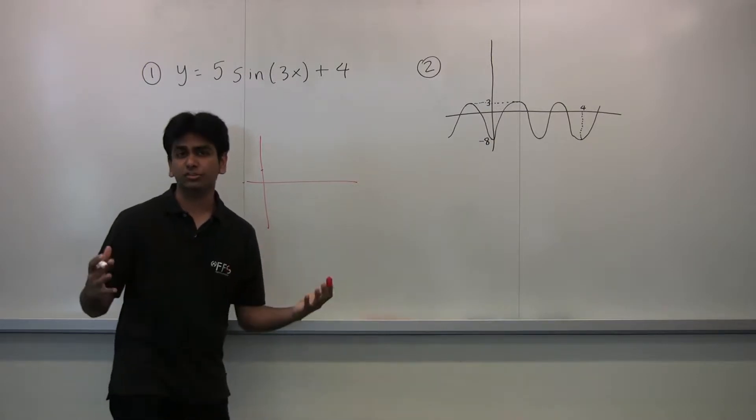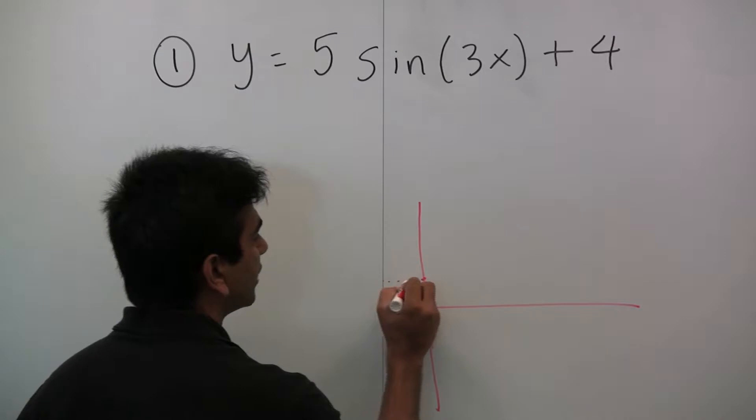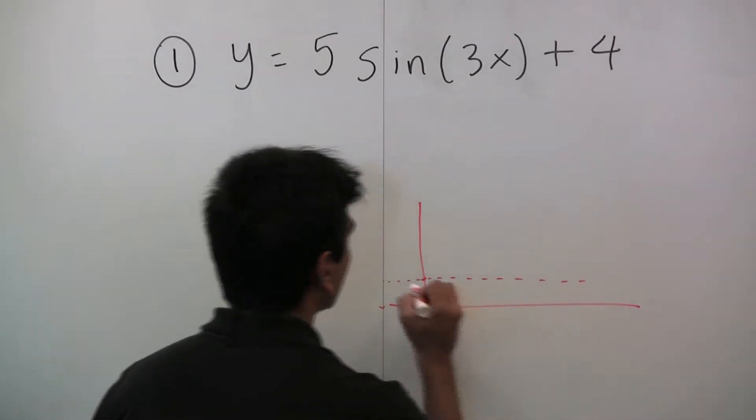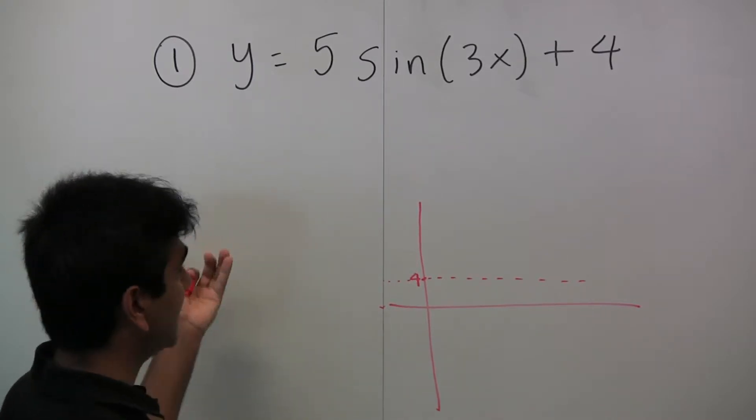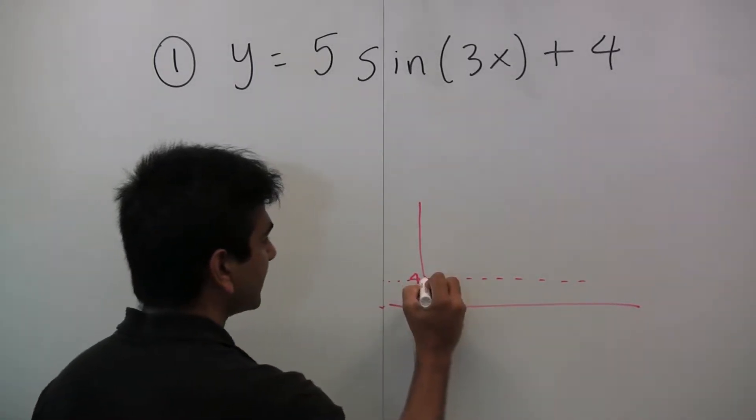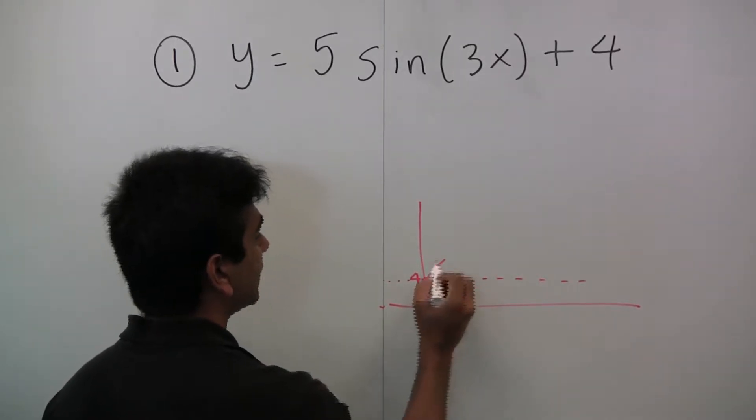c is the imaginary center line. It's not actually on your graph, but it's useful to draw it out in the beginning. This is the center line, and this is a positive sine function. It will start from the center when x is 0 and go up from there.